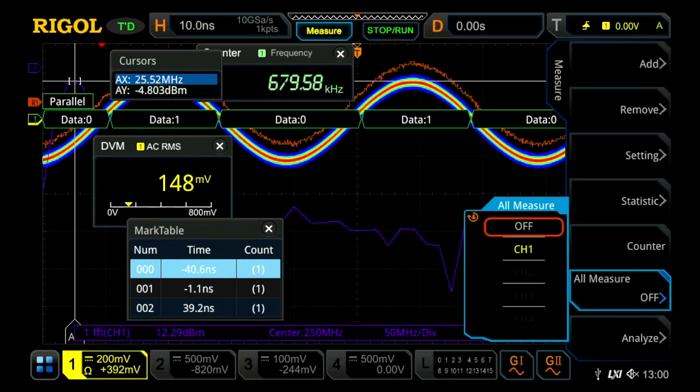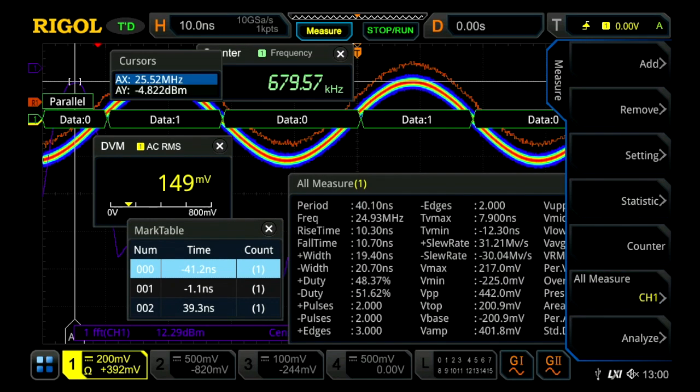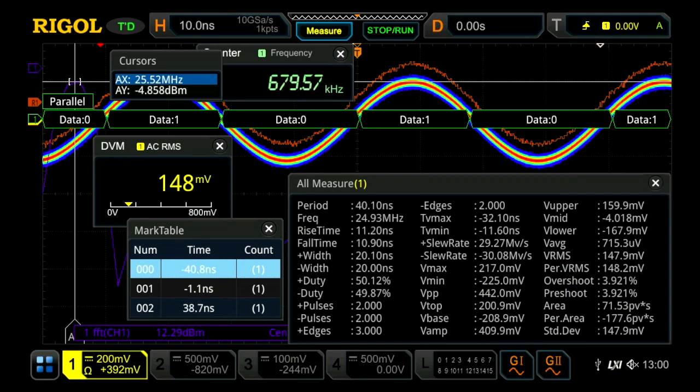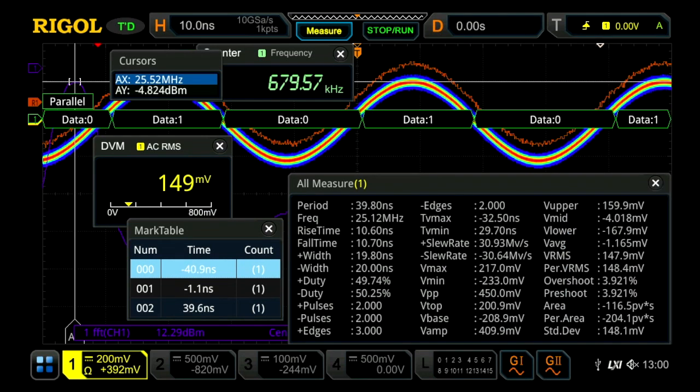Now we can see really a whole set of measurements being done in a number of samples and really still maintaining that 680,000 waveforms per second.